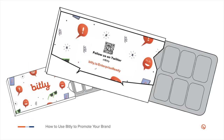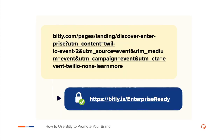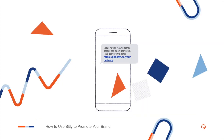When Bitly sponsored the Twilio Signal event, we wanted to make sure the collateral we shared with attendees had links that would be easy to remember. By using a branded link with a custom back half — the part after the forward slash — we were able to use a unique and memorable link on everything from flyers to packets of gum. Here's another example of how our customer Hermes Parcelnet, the second largest package delivery service in the United Kingdom, uses custom branded links in their SMS communications.